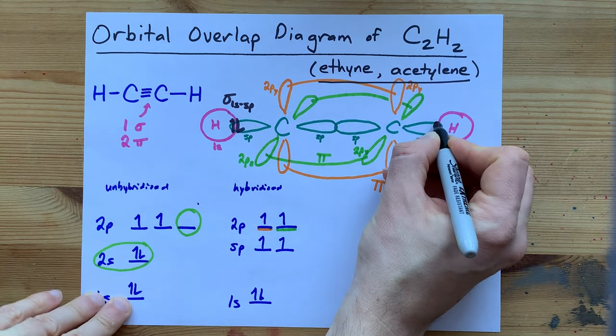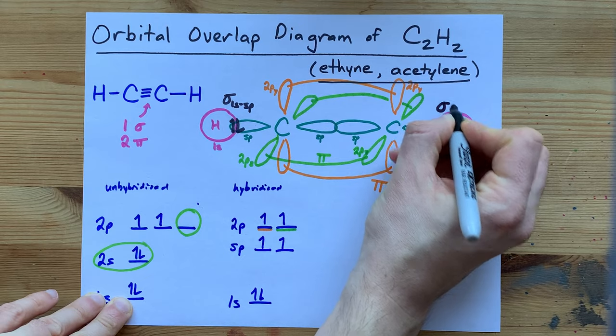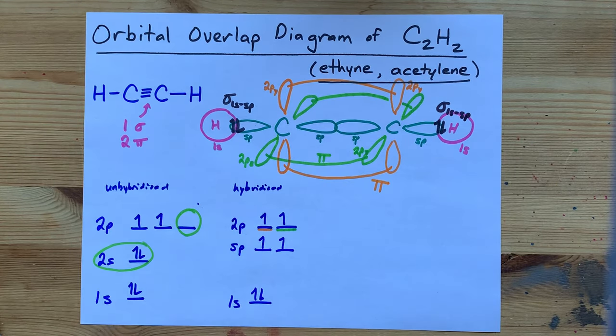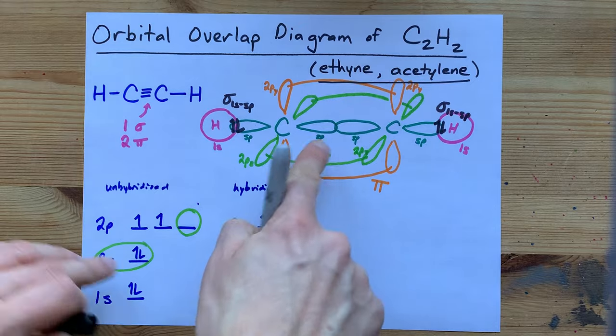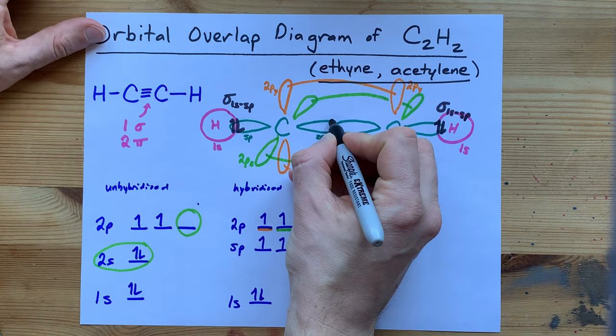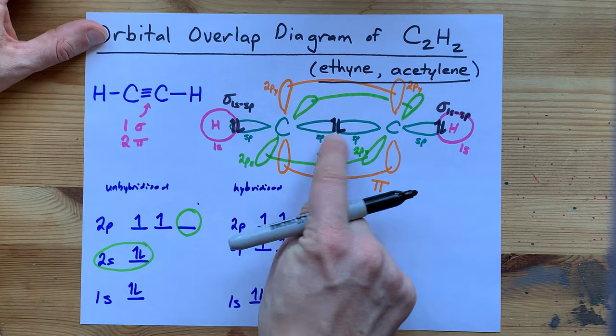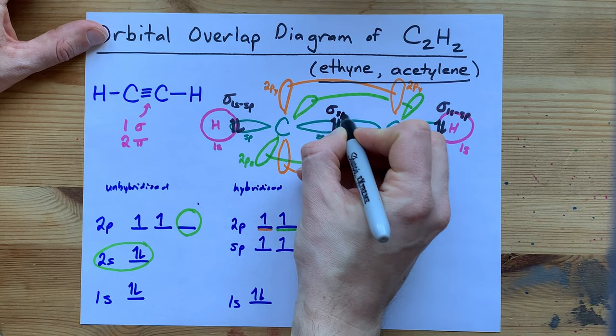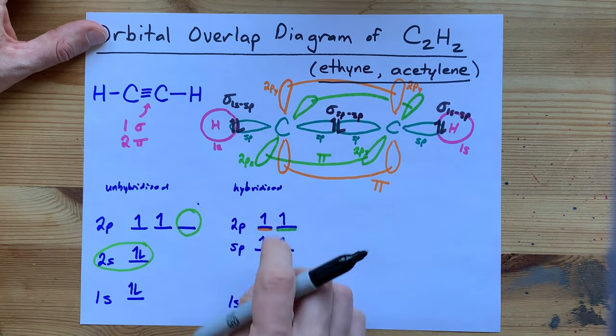You can do the same on this side. That's a sigma bond between the 1s of hydrogen and the sp of carbon. Between the two carbons, I have a sigma bond here between hybridized sp orbitals. That's a sigma sp sp.